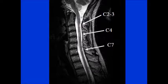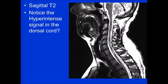On this sagittal STIR image, lesions are labeled at C2-3, C4, and C7 — the C2-3 and C7 lesions tend to be along the dorsal cord while the C7 lesion is more ventral. On the sagittal T2, you can see T2 hyperintensity in the dorsal cord at C3-4, C5-6, and C7 — those are multiple sclerotic plaques. The sagittal T1 post-contrast shows an area of enhancement in the dorsal cord at C7, indicating active demyelination.